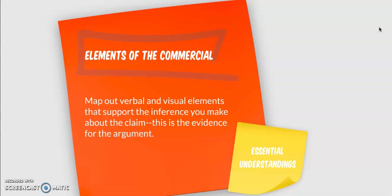After we establish a claim we have to start thinking about evidence. This includes the elements of the commercial. You would map out verbal and visual elements that support the inference you're making about the claim. That's why starting with argument helps first because then it's a matter of going back and kind of plugging the pieces in. Use the advertisement itself to support the claims that you believe you're making about it.